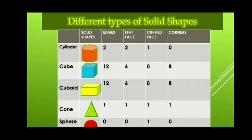Next are Cube and Cuboid. Both have 12 edges, 6 flat faces, 0 curved faces and 8 corners. The difference is that Cube has square faces and Cuboid has rectangular faces.